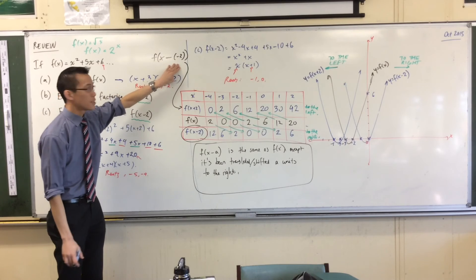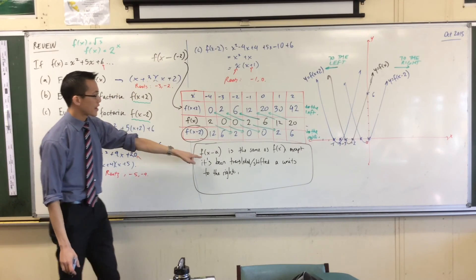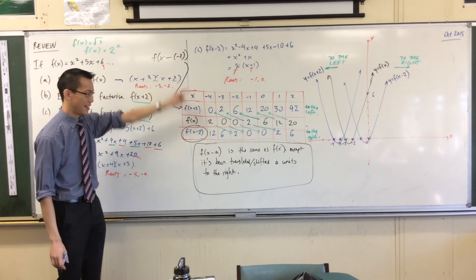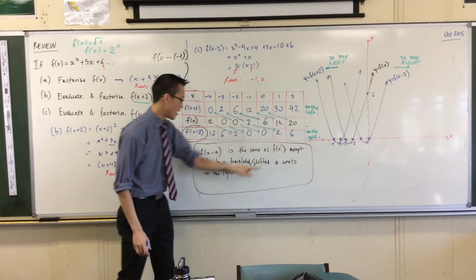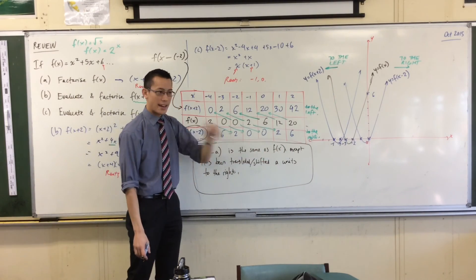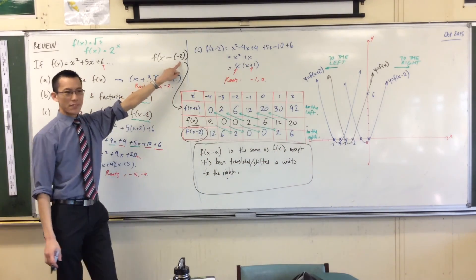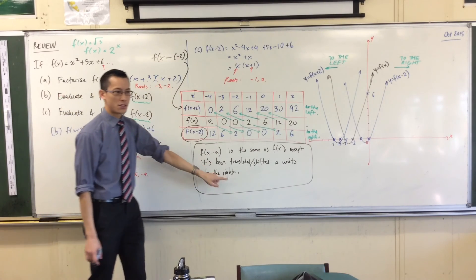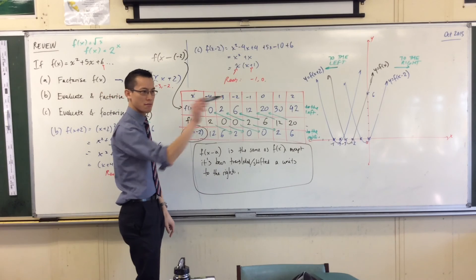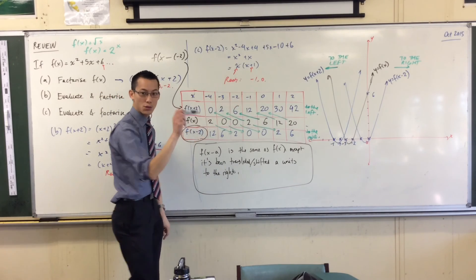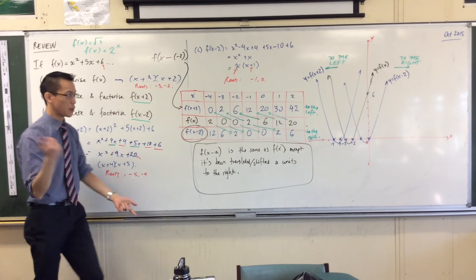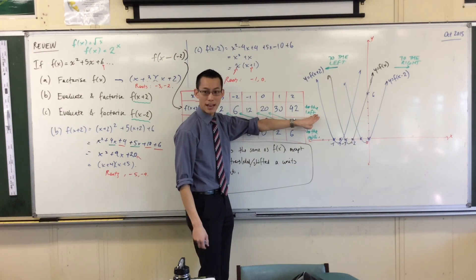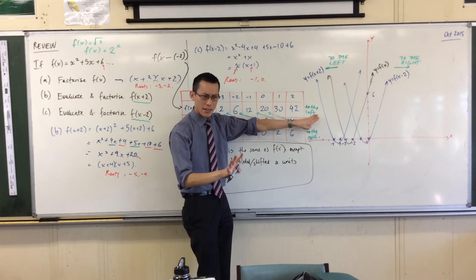So, what does this mean? This means, f of x minus that, is the same as f of x, but it's been translated... Now, mark this. It's been translated negative 2 units to the right. So, to the right's going that way, but I've got negative 2 in the opposite direction, which we would usually say is to the left. Okay? Does that make sense?